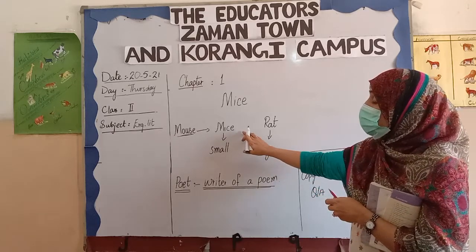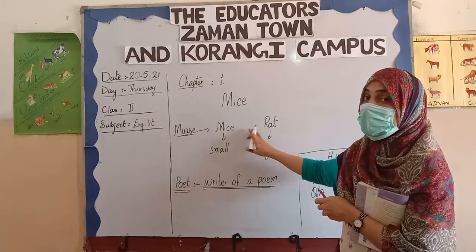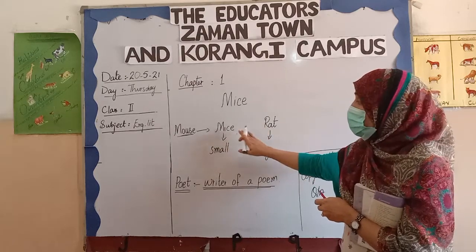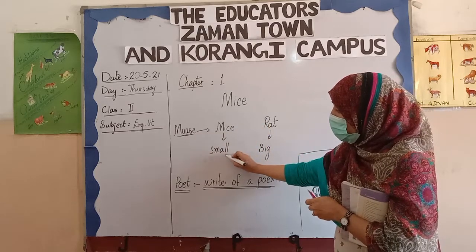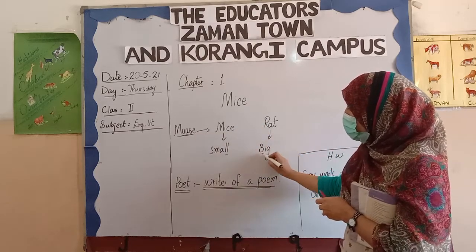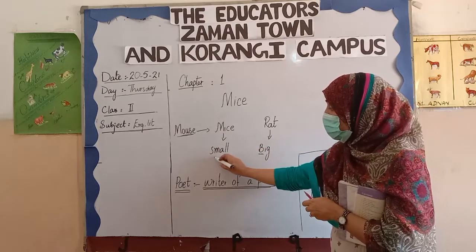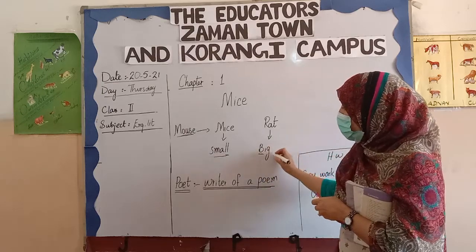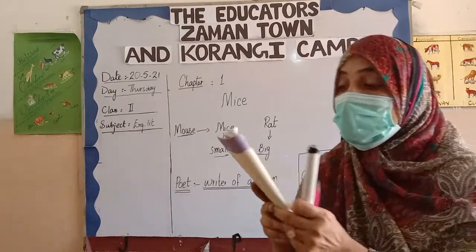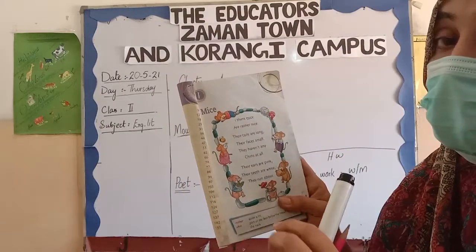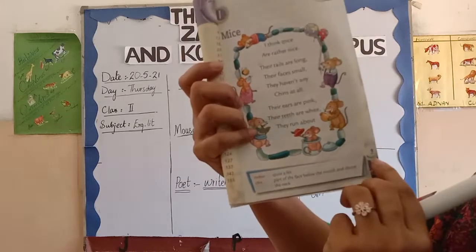Now we will learn the difference between mice and rats. You know very well what rats and mice are. Mice are very small but rats are big. They are small animals. This is your page, my dear student, page number 9. This is your chapter.